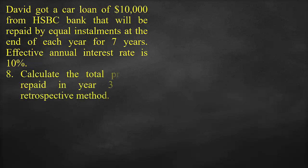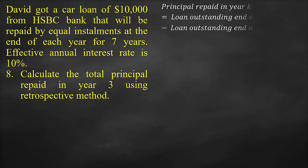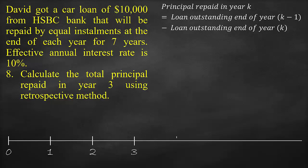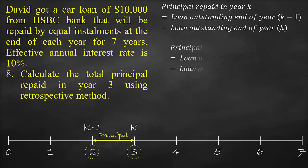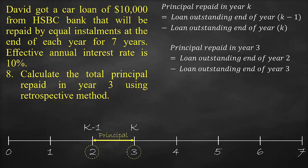The next part of the question is to calculate the total principal repaid in Year 3 using the retrospective method. In order to know the value of the principal repaid in any year, we need to know the value of the loan at this year and the value of the loan of the previous year. The difference of these two values is the amount we paid of the loan, which is the principal. If we would like to estimate the total principal repaid in Year 3, we would need to estimate the loan outstanding at Year 3 and the previous year at Year 2.